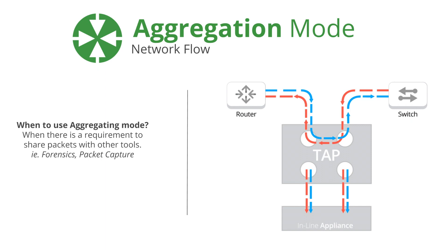For example, if this is a 1G network, you have the potential of 2G worth of traffic out of each monitor port, because it is full duplex. You have 1G on the blue line and 1G on the red line of traffic, and together those equal 2G worth of traffic. So, if your utilization is greater than 50% on your 1G network, then you would not want to use aggregation mode.